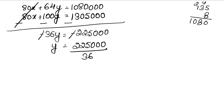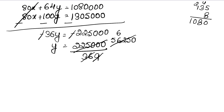Solving 36y = 225,000, we calculate 225,000 divided by 36. Working through the division: y equals 6250.